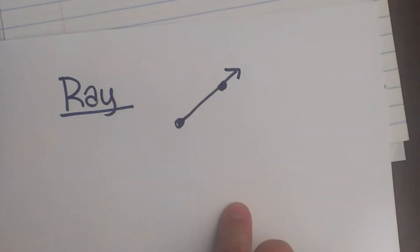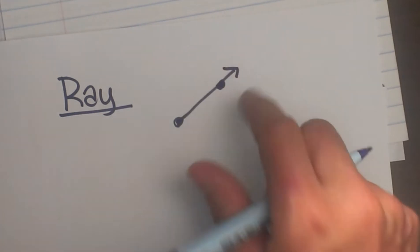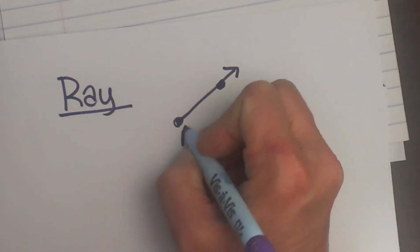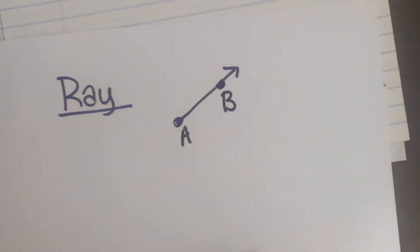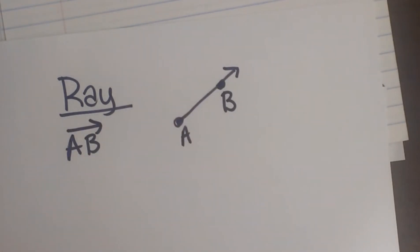Let's first look at a ray. A ray has an endpoint, and it goes in one direction. In this case, I'm going to name this ray AB. When I write that name, I have to start with my endpoint. I'm going to start with A through B, and it is continuous through B. That is ray AB.